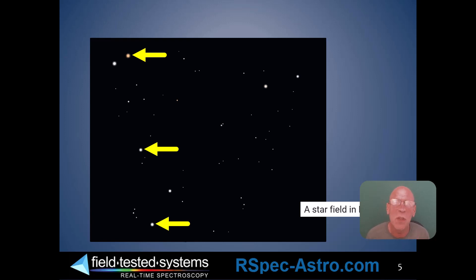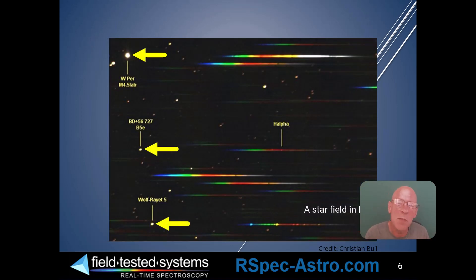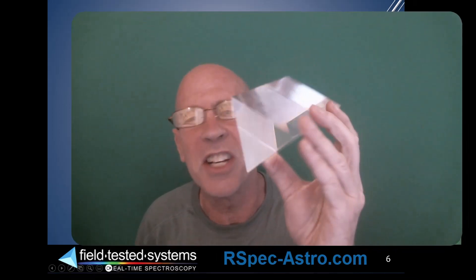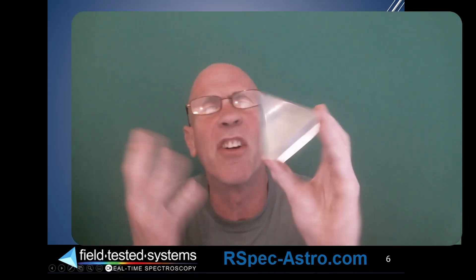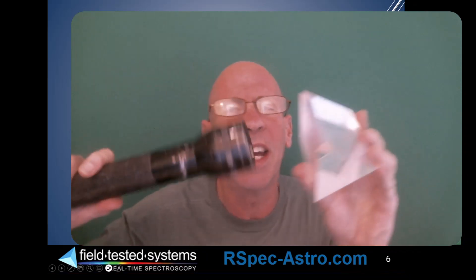The first thing we do in spectroscopy is we have to split that starlight into rainbows. Here are the same three stars. This image was captured with just a DSLR. Let's take a quick aside to look at this — this is just a standard, everyday prism. And if I had a bright light and shined it through, we'd get a rainbow. Standard stuff.